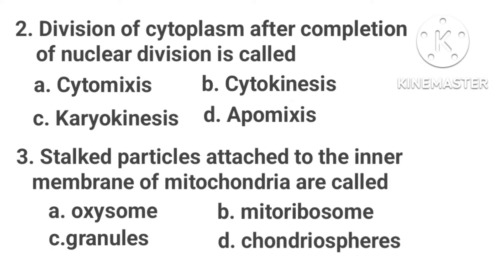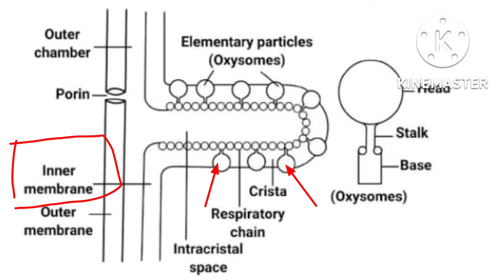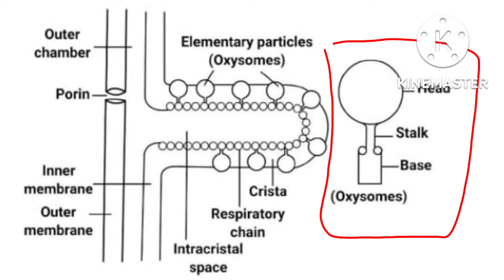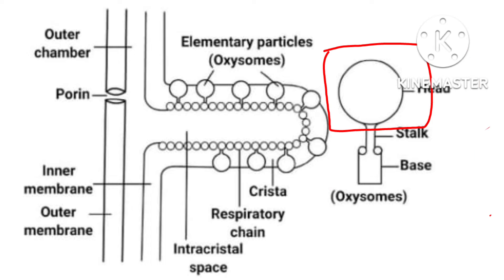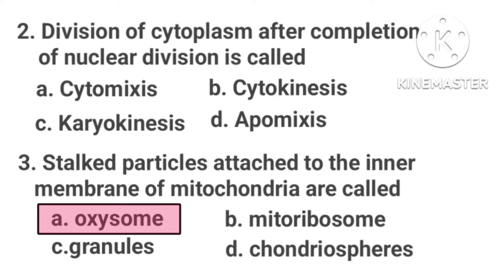Cytokinesis. Next, stacked particles attached to the inner membrane of mitochondria are called: Option A, oxysome. Option B, mitoribosome. Option C, granules. Option D, contriosphere. The inner membrane is studded with pinhead particles called oxysomes, or elementary particles, or F particles, or subunits of Fernandez-Moran. Each oxysome consists of three parts: basal piece, stalk, and head. ATP synthesis occurs in the head region of oxysome because ATPase enzyme is present there. So the correct answer is Option A, oxysome.